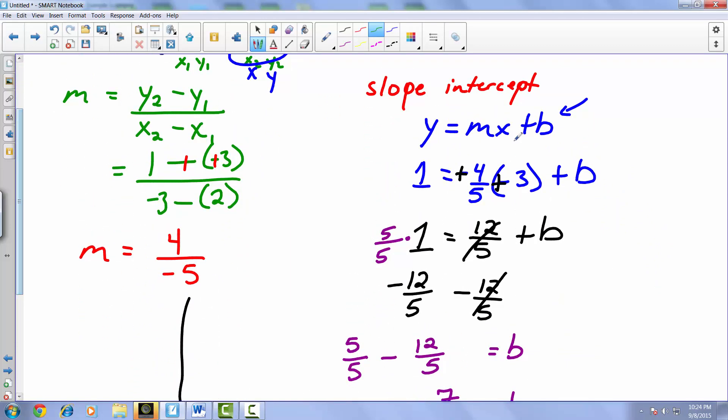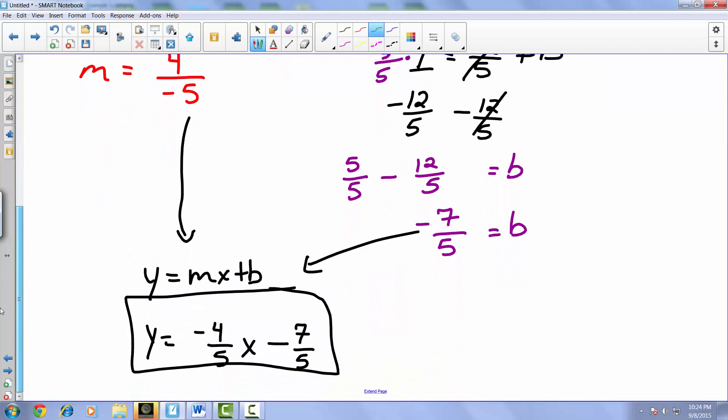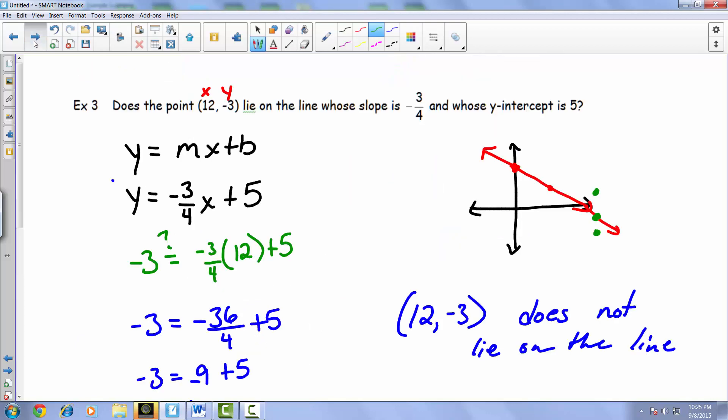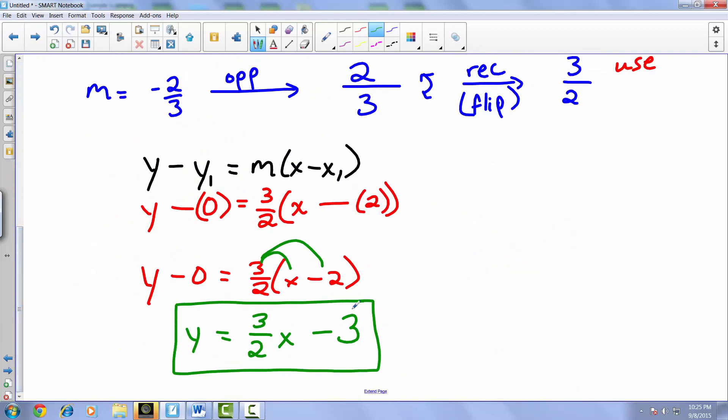We had to actually go ahead and plug in our values, find this b, and then after we found b, we had to rewrite the equation of the line. Whereas point-slope, you're literally done at the end. You don't have to rewrite anything. That's the bonus with point-slope.